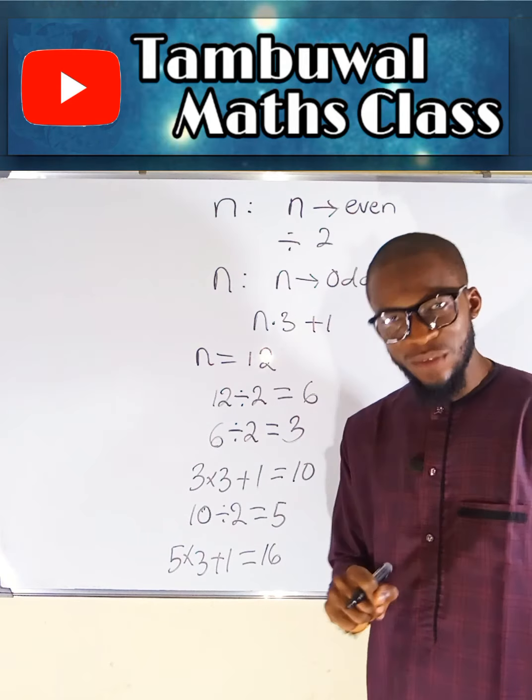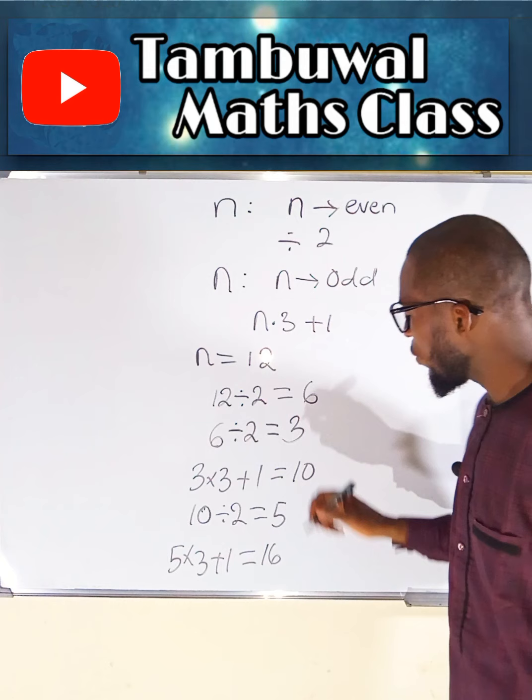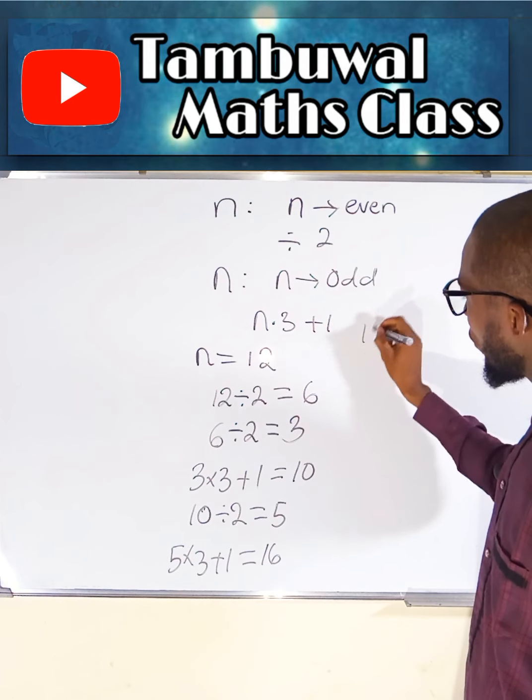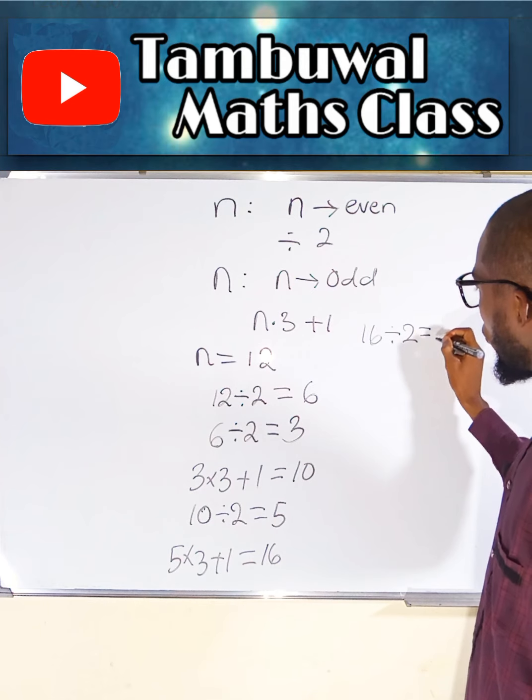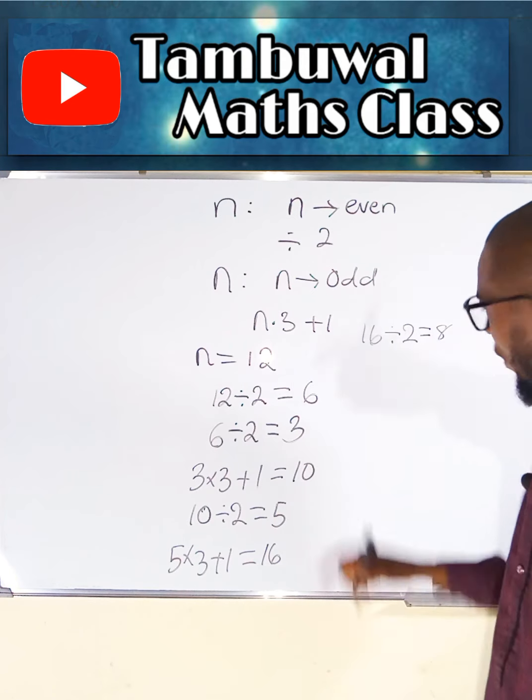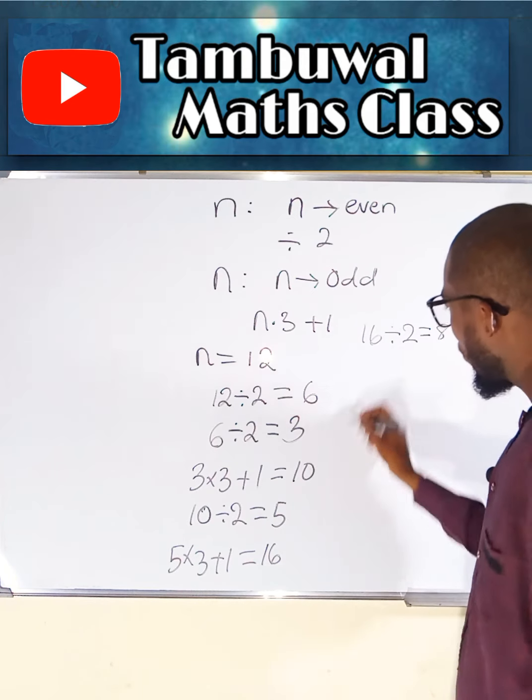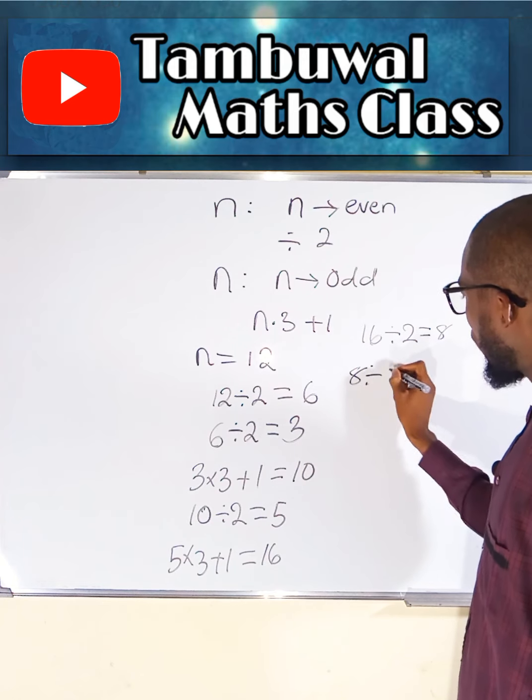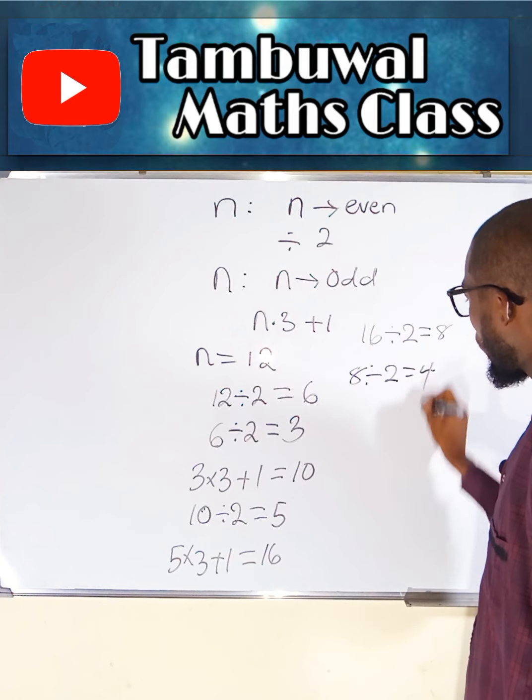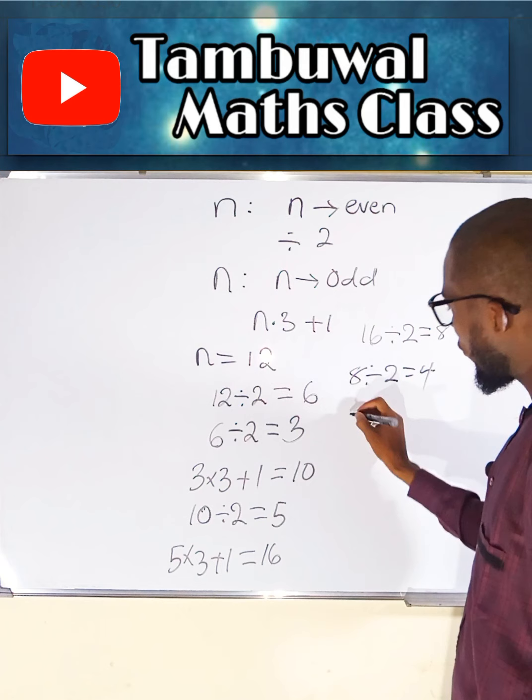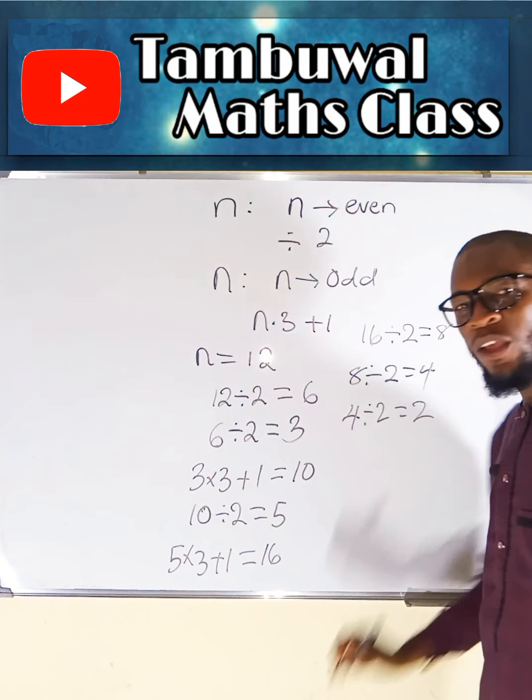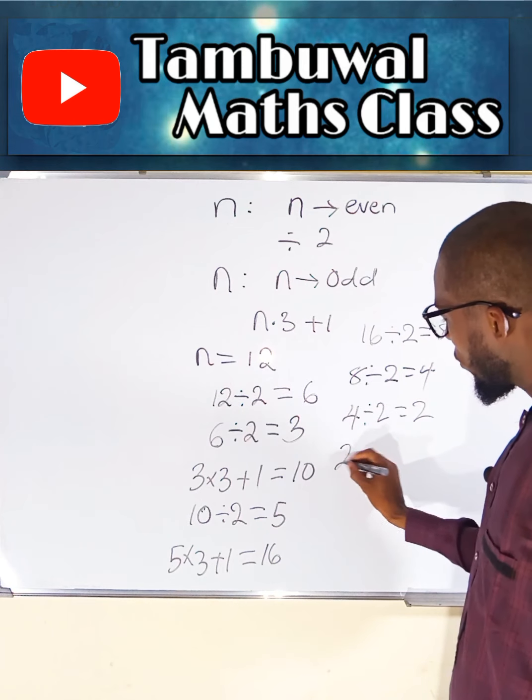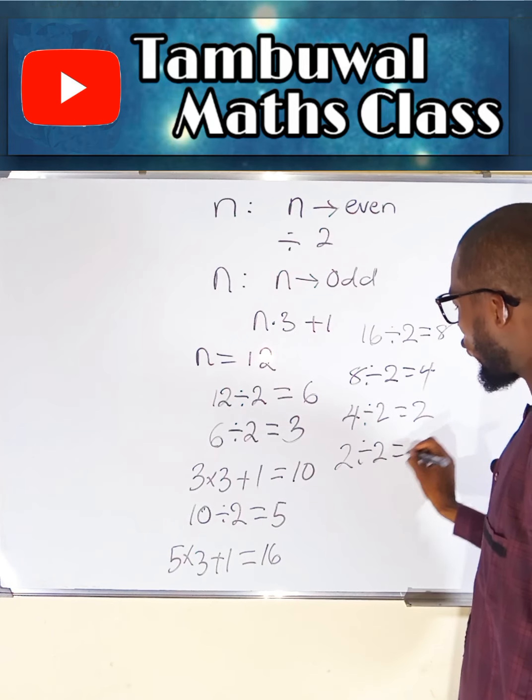16 is an even number. So what do we do? 16 divided by 2, and this is equal to 8. 8 is an even number. We say 8 divided by 2 is equal to 4. 4 is even. 4 divided by 2 is equal to 2. 2 is even. 2 divided by 2 is equal to 1.